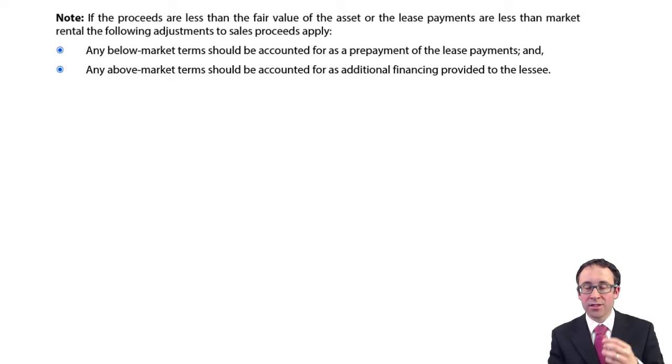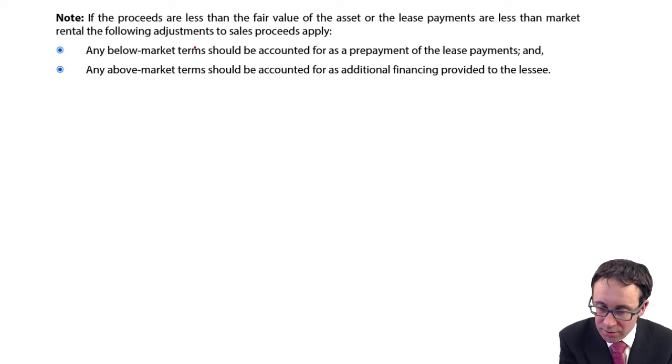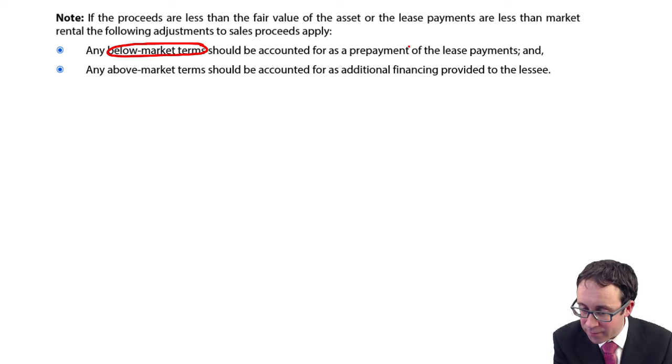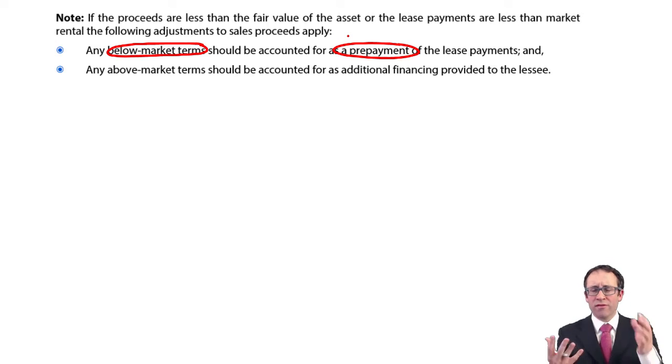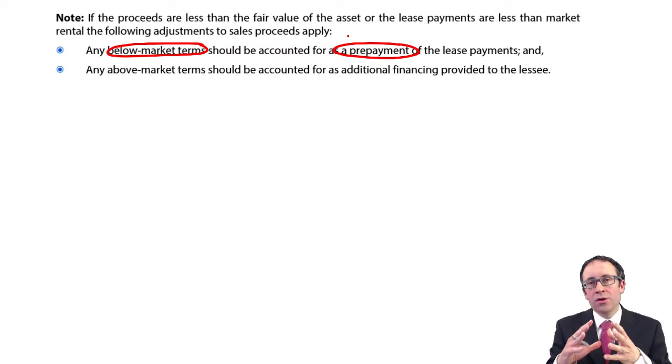If it's below the market terms, then what you will have there will be a prepayment. Effectively, you're receiving less cash than what you should based on the fair value. So because you're receiving less cash, you would pay less cash back. But the key bit that we want within our financial statement is we want to reflect fair value.